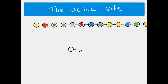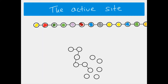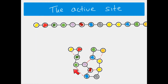This long chain — this polypeptide — is going to be folded into a 3D tertiary structure. Here we can see an example of how it might be folded; this is very simplified but imagine it represents a 3D spherical structure, because enzymes are globular proteins. This tertiary structure is held in place by various bonds: hydrogen bonds, disulfide bridges, and other covalent bonds.